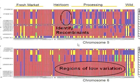We used the GDT program for graphical genotyping of our tomato collection. Only two chromosomes are shown here. On chromosome 5, we identified several recombinants of the vintage varieties. We also found that the second half of chromosome 6 showed low genetic variation between varieties, except for the wild species.